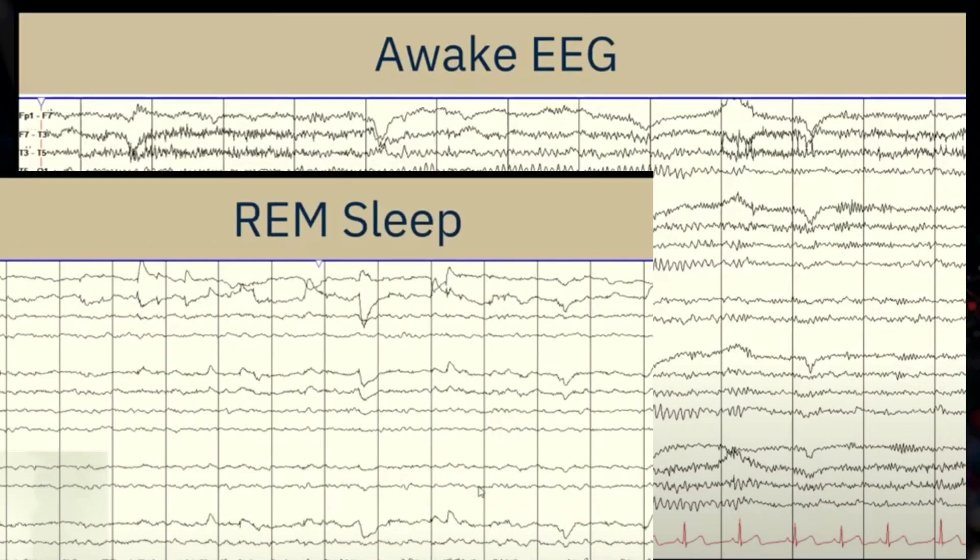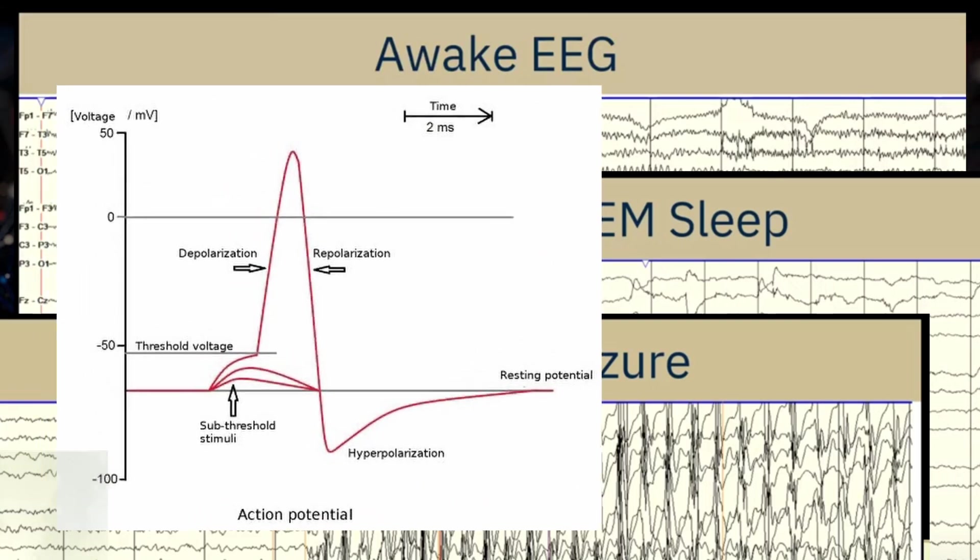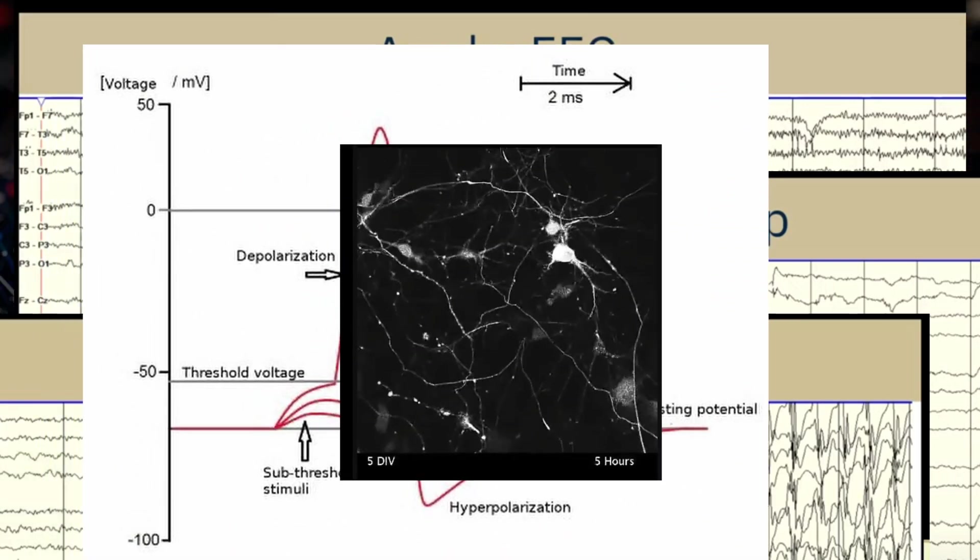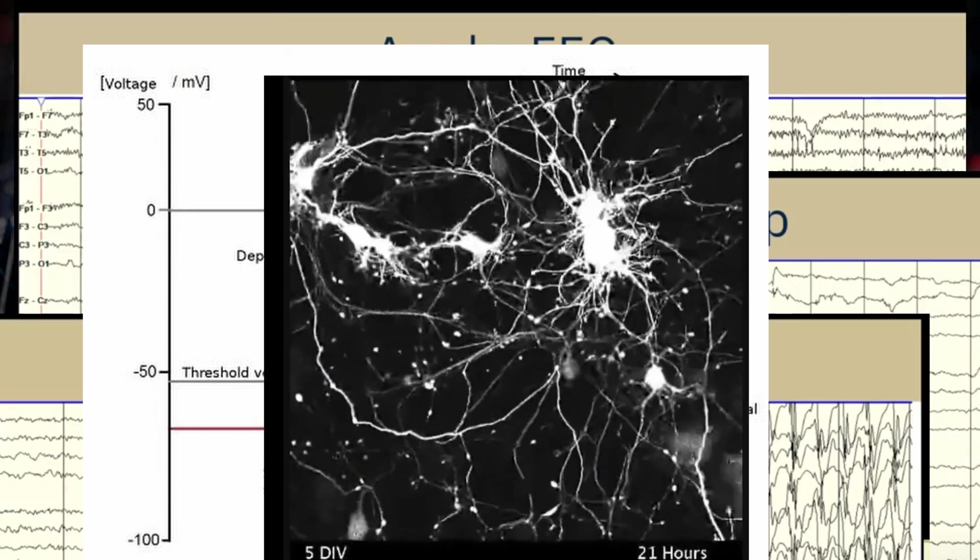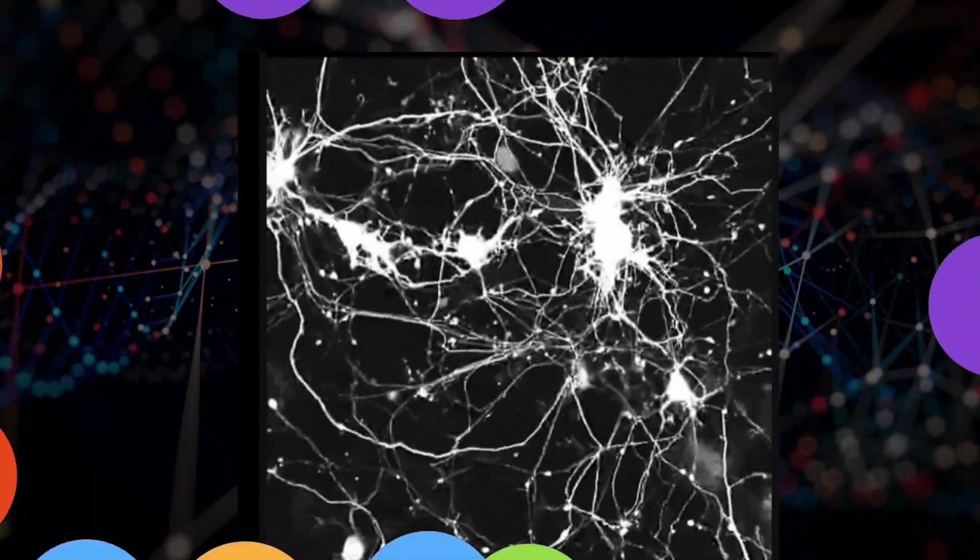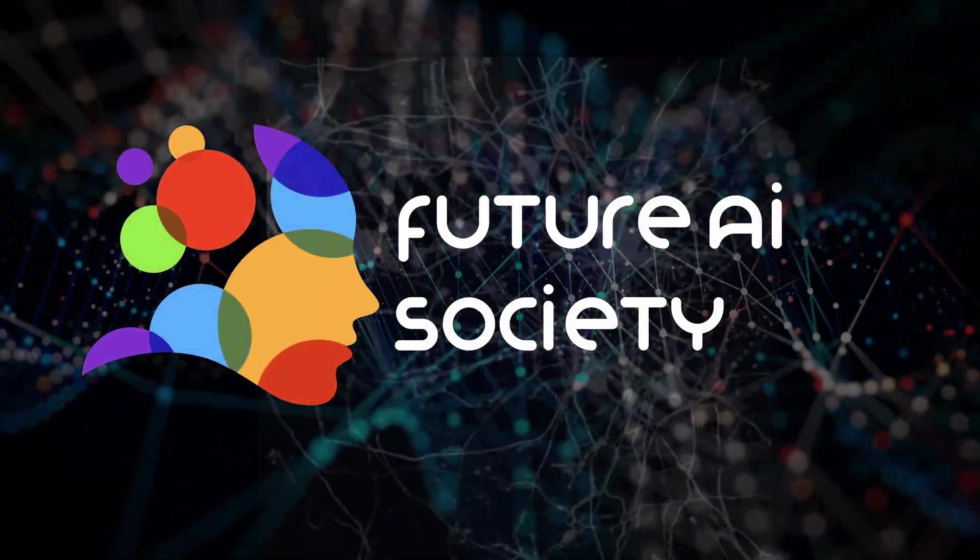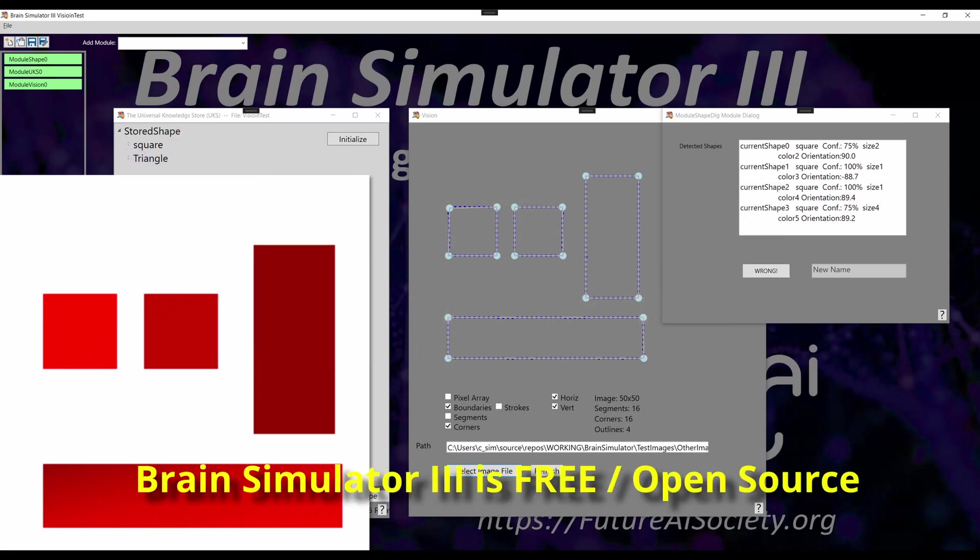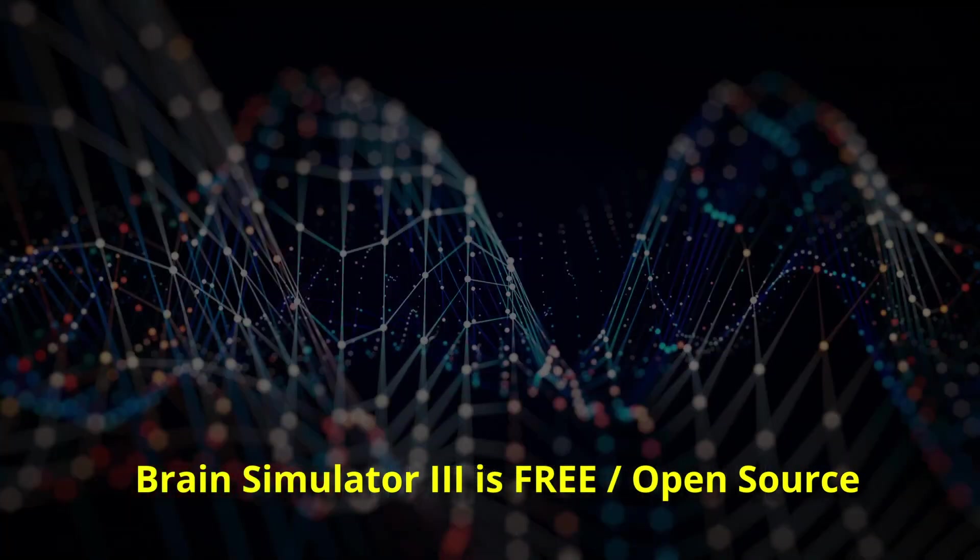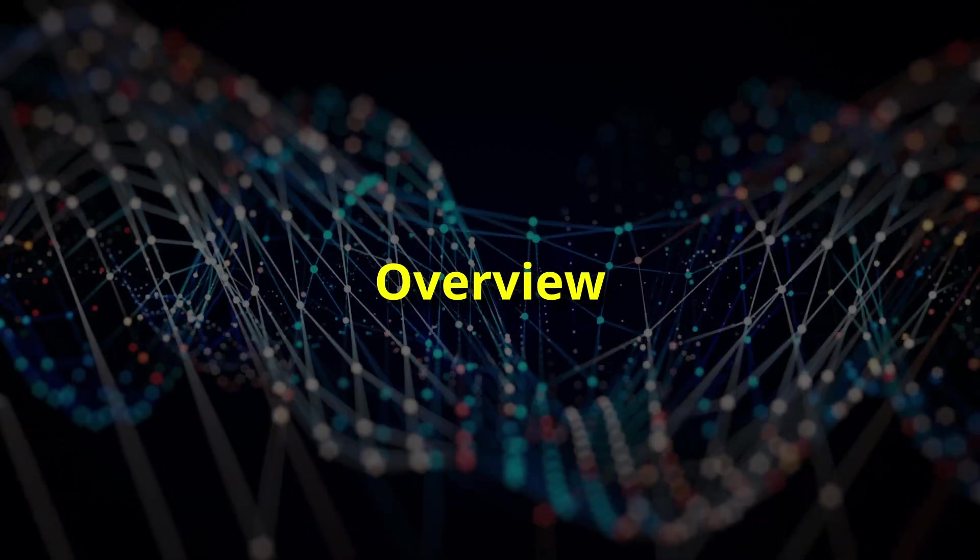Let's dive in. I'm Charles Simon, long-time AI researcher, software developer and manager. In addition to AI work, I've developed software for several neurological test instruments and neural simulators and along the way learned a lot about the capabilities and limitations of biological neurons. I founded the Future AI Society to pursue these ideas and we're writing all aspects of this process in the open source Brain Simulator 3.